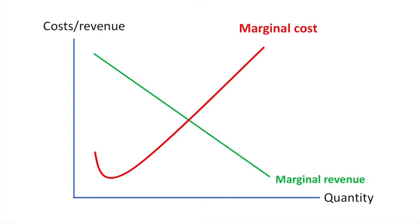The firm is going to continue to produce more units as long as marginal revenue exceeds marginal cost. If the additional revenue earned from the sale of a good exceeds the additional cost of producing that good, then a positive contribution is being made towards profit. The profit maximizing level of output is Q star.